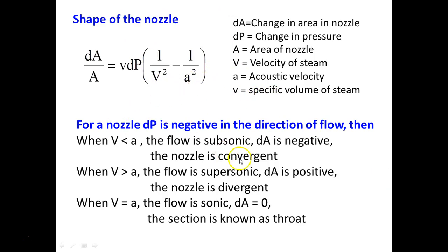When steam flows through the nozzle, the pressure always decreases from inlet to outlet, and the velocity V is increasing. For a nozzle, dP is negative — pressure is decreasing in the direction of flow. The objective of the nozzle is decreasing the pressure of the steam and increasing the velocity of the steam. We take three different conditions. When the velocity V is less than acoustic velocity A, the flow is subsonic.